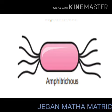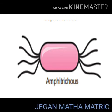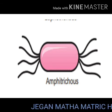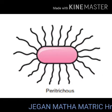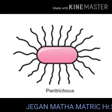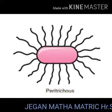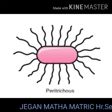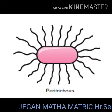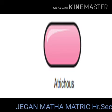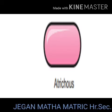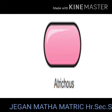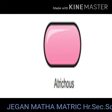If you see a tuft of flagella at both sides of the bacteria, then it is called amphitrichous. If we see flagella surrounding the whole body of the bacteria, then it is said to be peritrichous. A bacterium which does not have any flagella is said to be atrichous.